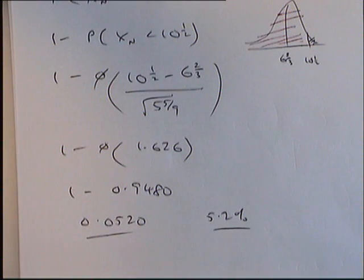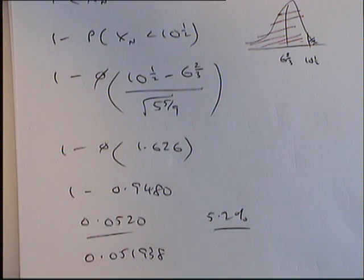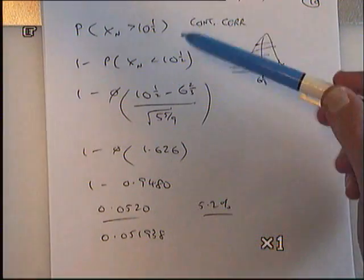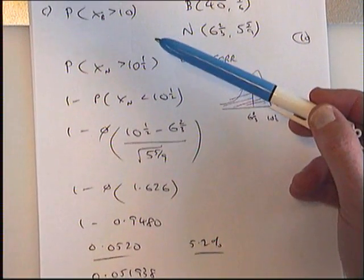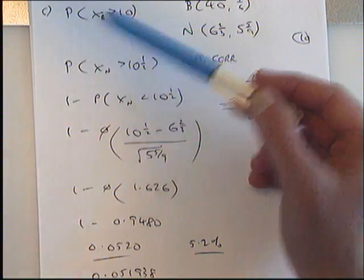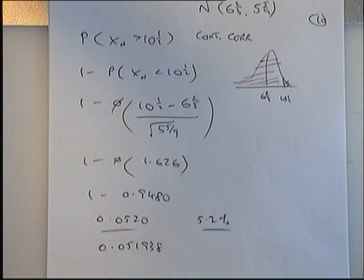If you've done it on a calculator, you may get something slightly different, but hopefully pretty close. Brent, have you got a calculator answer? 0.05192. So close — that's the calculator answer. That's another example of the continuity correction. You've got to be really careful: was it 10.5 or 9.5 that went in? This is when it really makes a difference as to a greater than sign or a greater than or equal to sign — that would make a difference in that question.